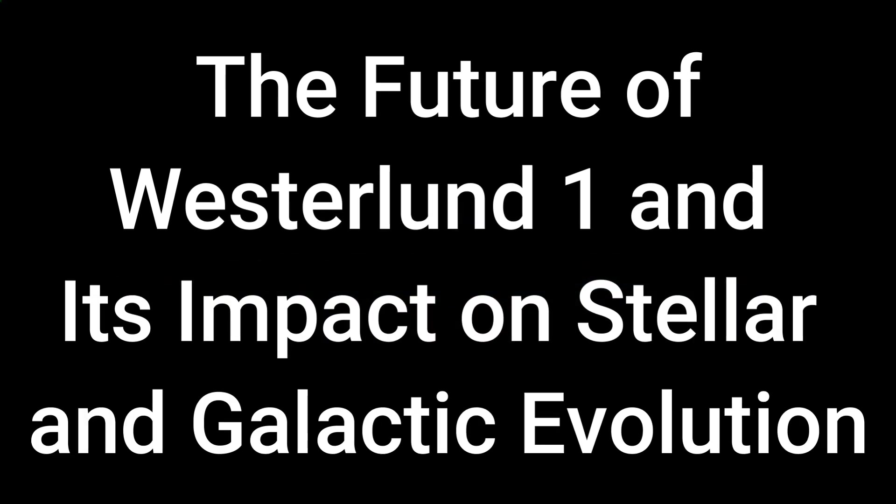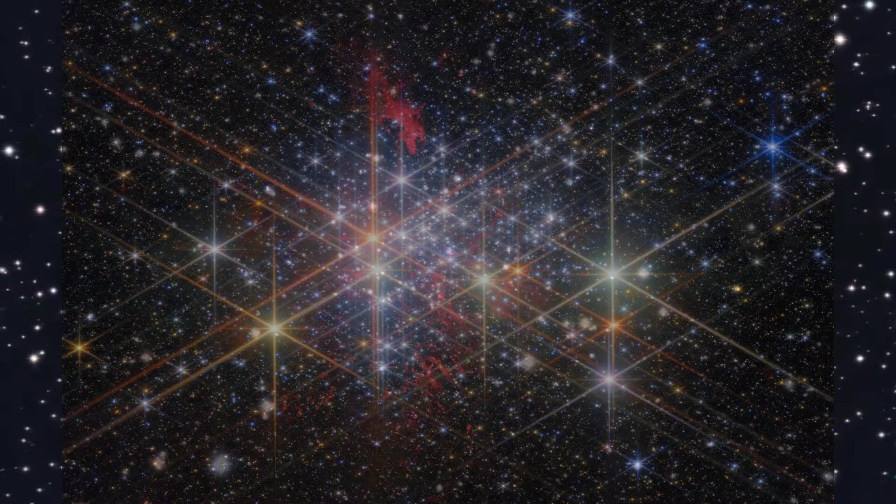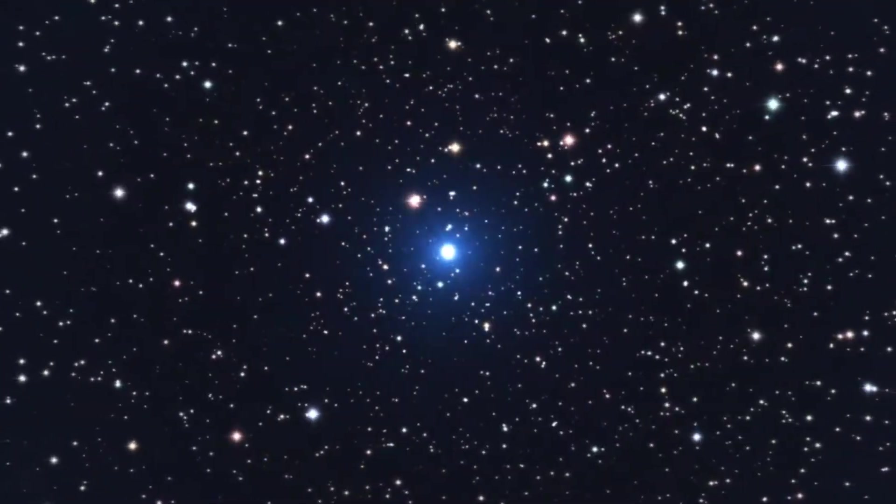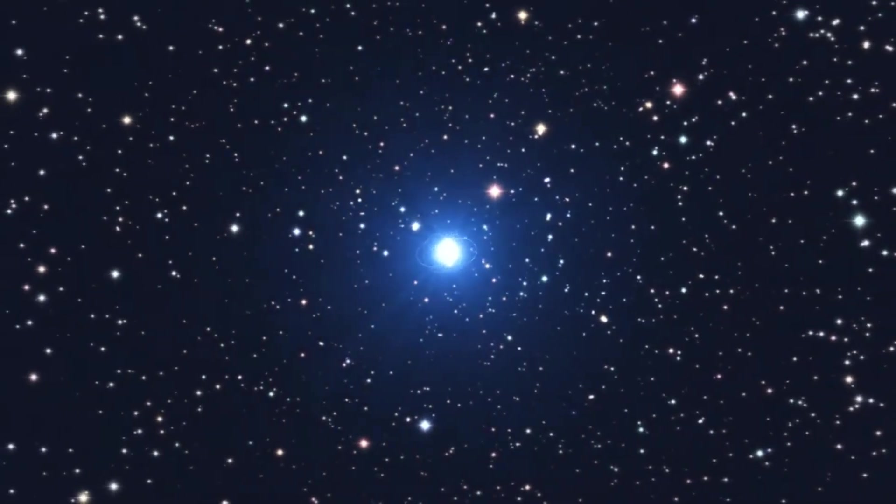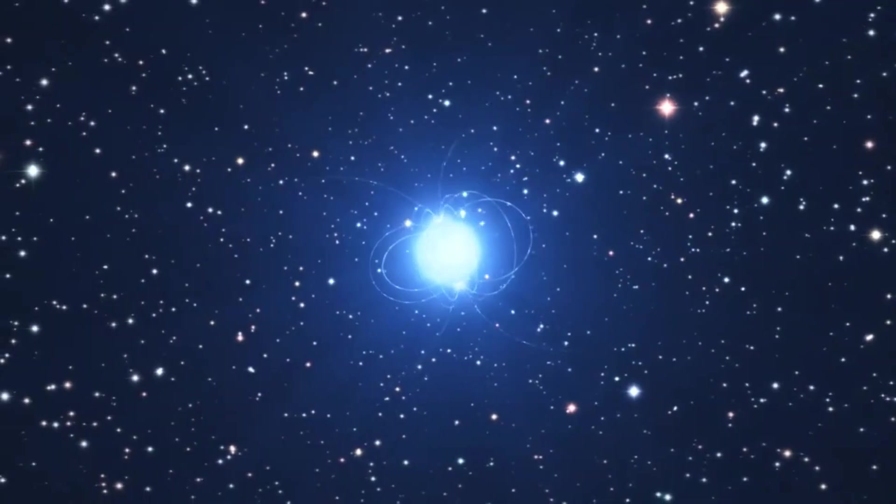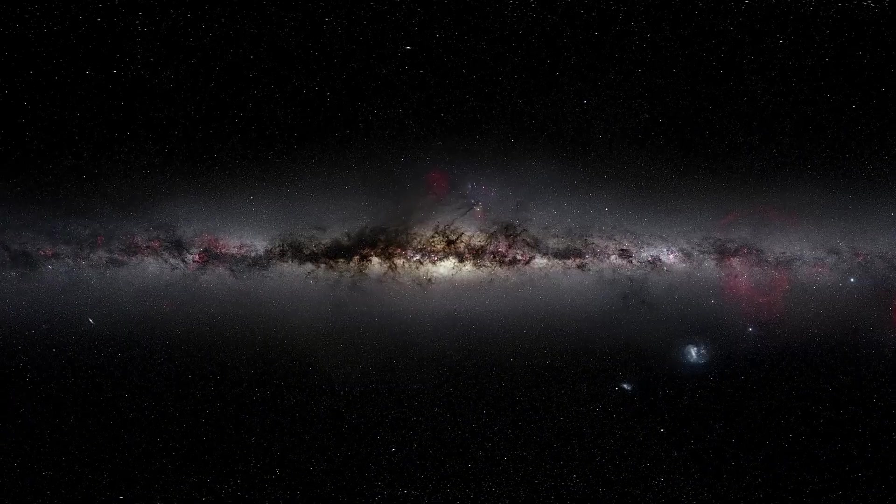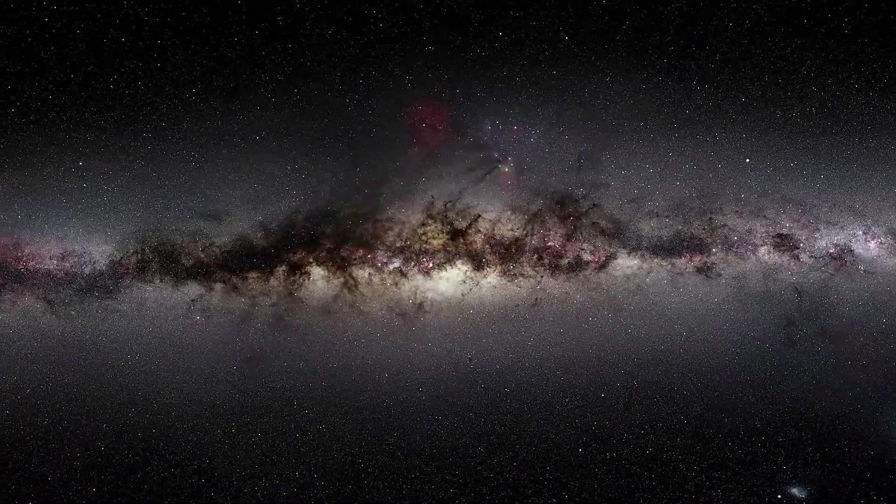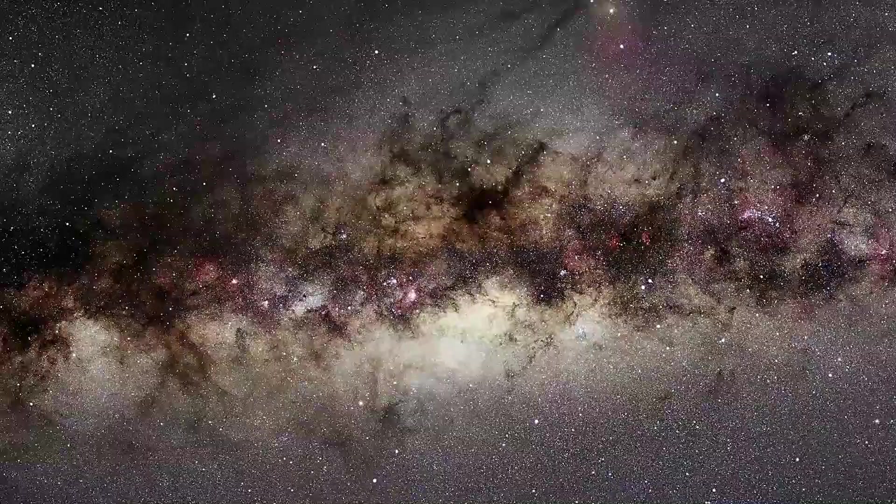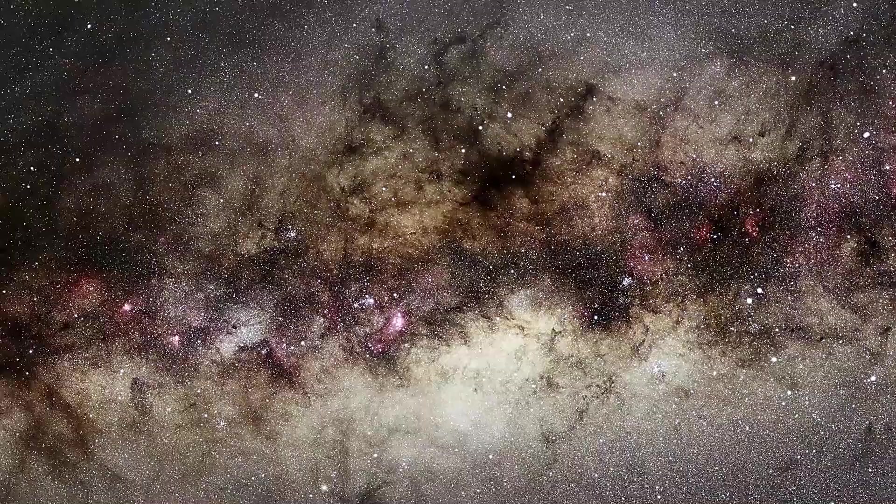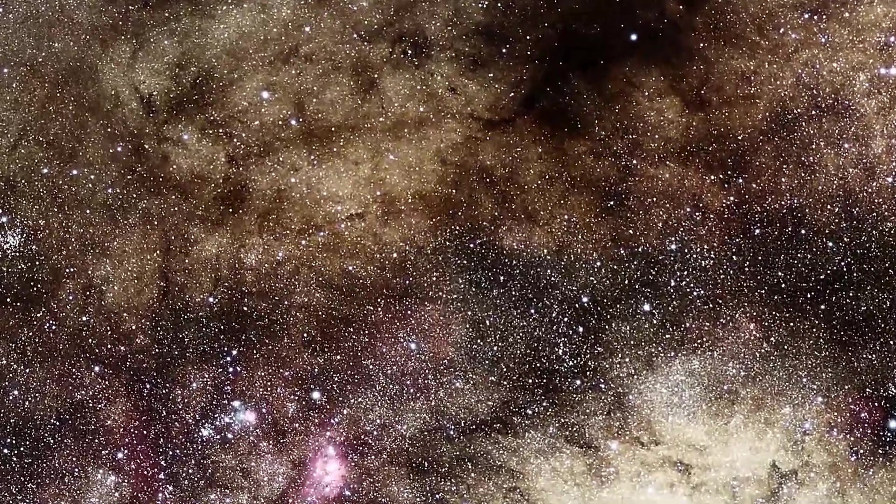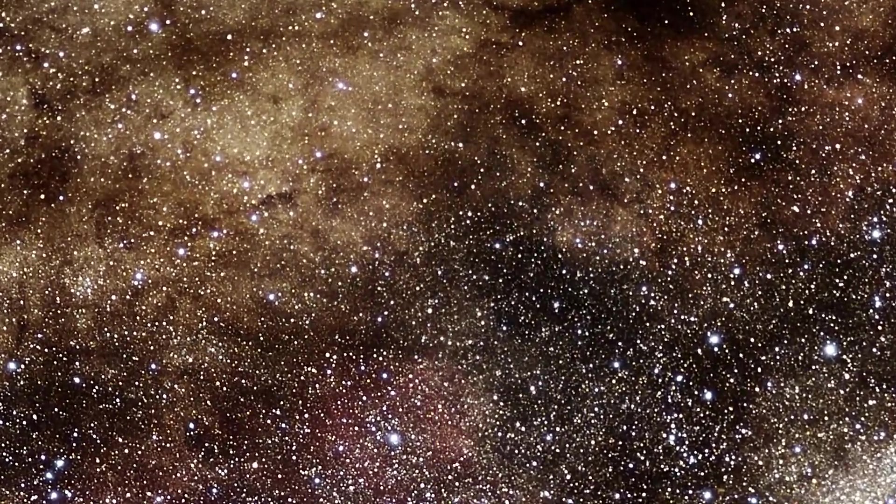Westerlund 1 is not only a window into the past, but also a key to understanding the future of massive star clusters. As the cluster evolves over the next millions of years, it is expected to undergo significant changes, transitioning from its current status as an open cluster into a globular cluster. This transformation involves the gravitational tightening of its stellar population, forming a roughly spherical, dense, and stable collection of stars.